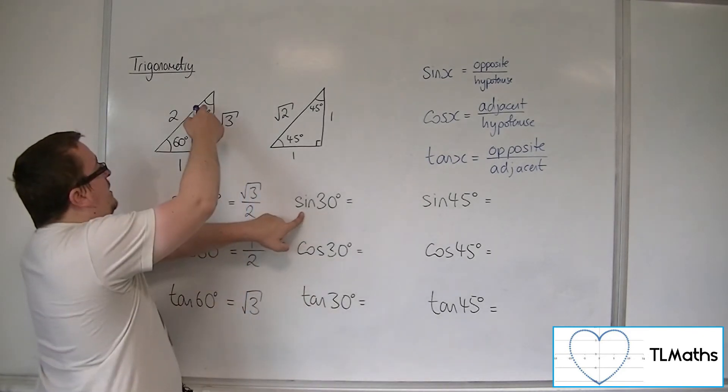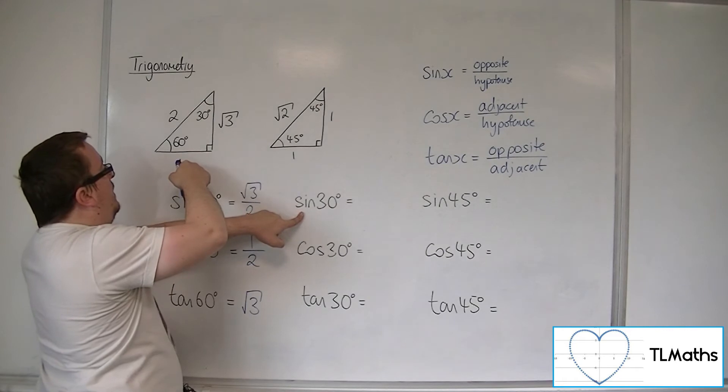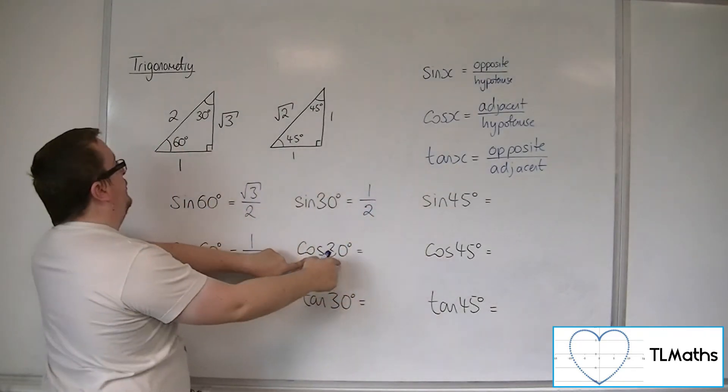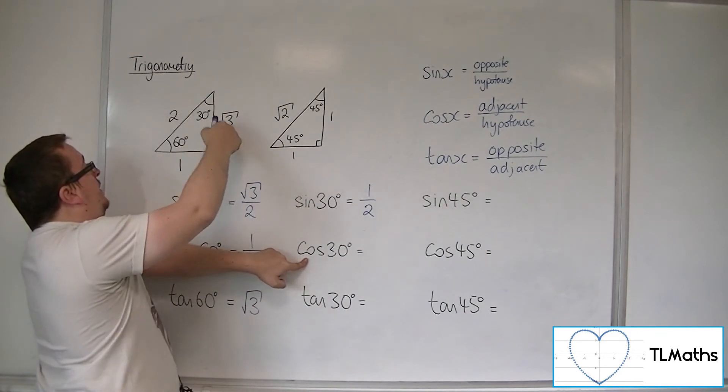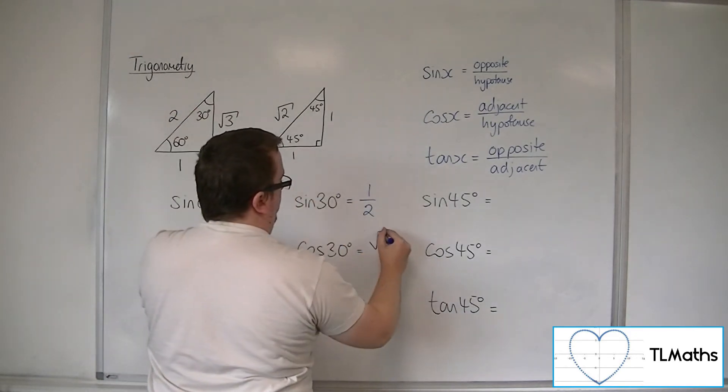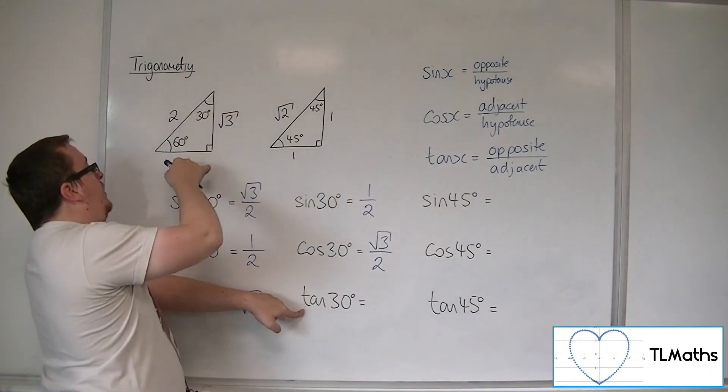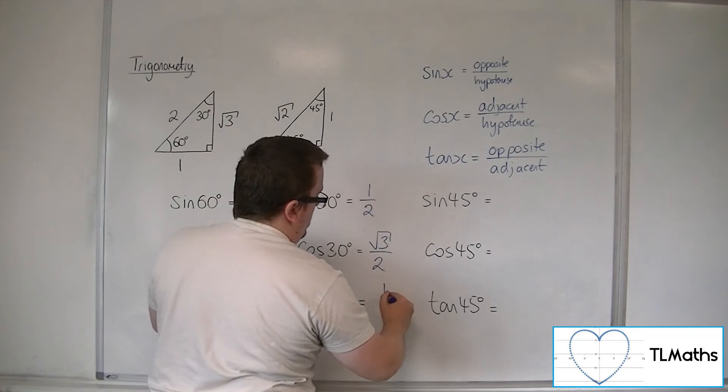Sine of 30, there's your 30 degree angle, is opposite over hypotenuse, so 1 over 2. Cosine of 30 uses the adjacent over the hypotenuse, so root 3 over 2. Tan of 30 uses the opposite over the adjacent, so 1 over root 3.